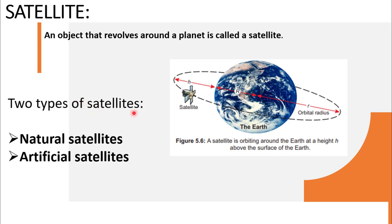Satellites are of two types: natural satellites and artificial satellites. Natural satellites are those which are made by Allah — they exist naturally. Artificial satellites are those that are man-made. So let's discuss natural satellites and artificial satellites in detail.